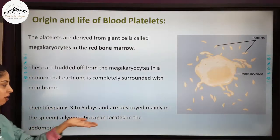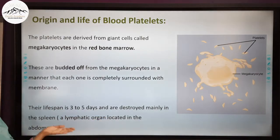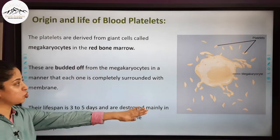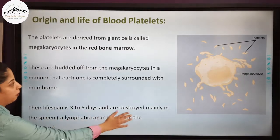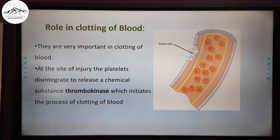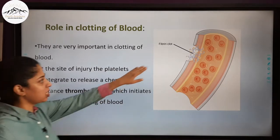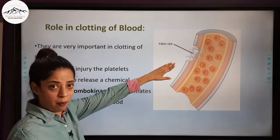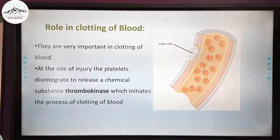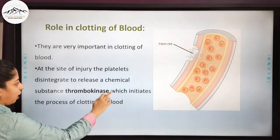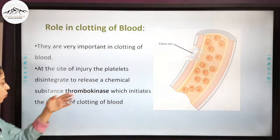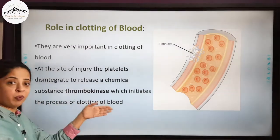After their lifespan, platelets are destroyed in the spleen, which is a lymphatic organ located in the abdomen. Platelets are very important in clotting of blood. At the site of injury, the platelets rush towards that site and disintegrate there, releasing a chemical substance known as thrombokinase, which initiates the process of clotting of blood.